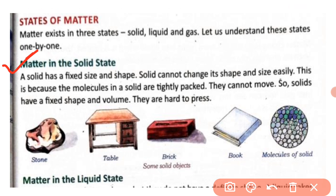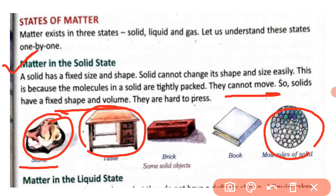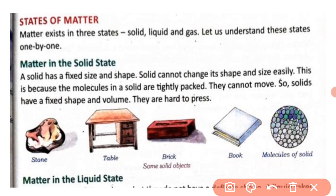The molecules in a solid are tightly packed, which is why solids have a fixed size and shape. We cannot press a solid easily — for example, can you press a stone easily? No, it is too hard. A table also has a fixed size and shape.